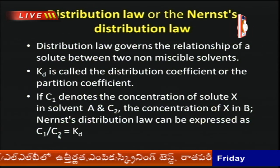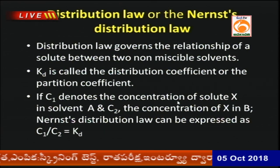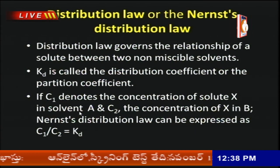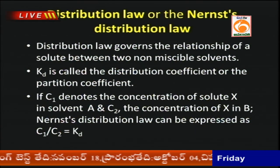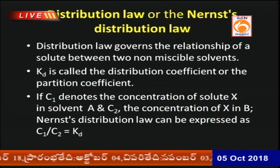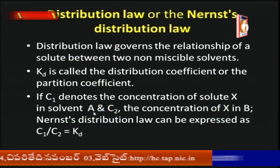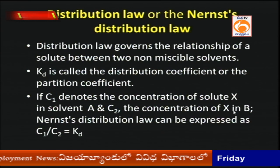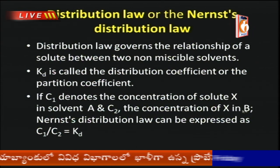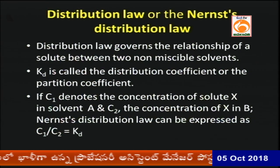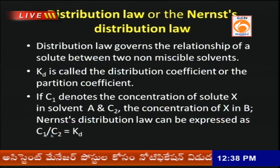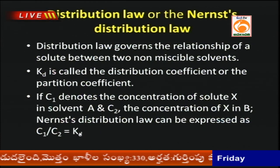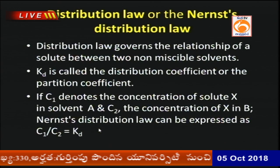The Nernst distribution law states that when a solute is added to two non-miscible solvents and it has the ability to dissolve in both, the distribution coefficient KD is defined as the ratio of concentrations C1 and C2, where C1 is the concentration of solute X dissolved in solvent A, and C2 is the concentration in solvent B. This ratio of the two concentrations remains constant, given by the distribution constant KD.